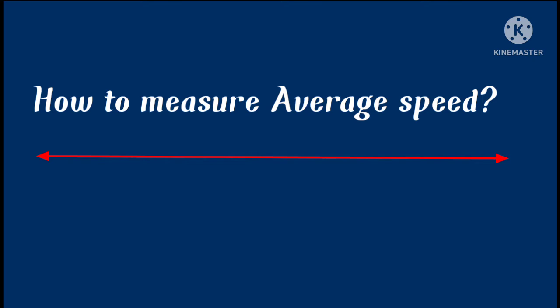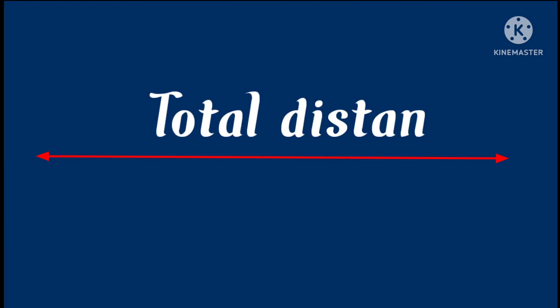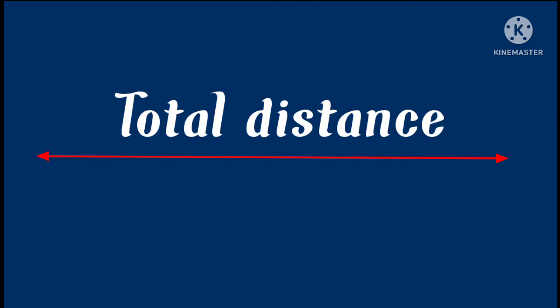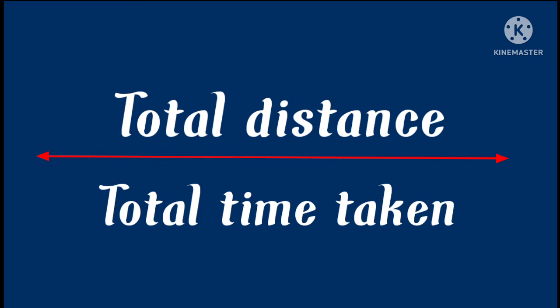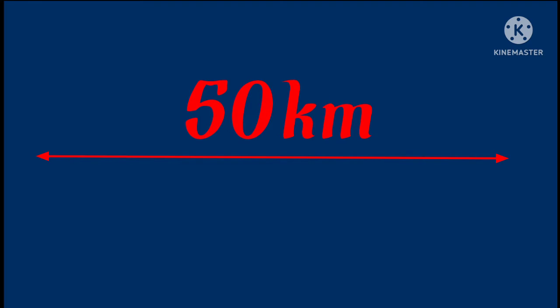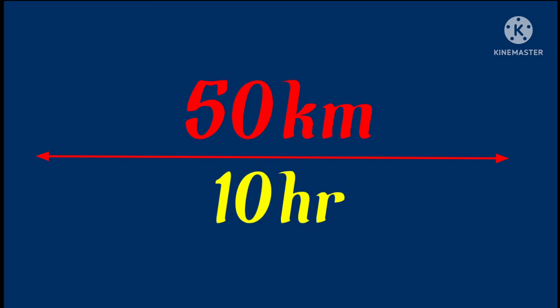The question is: how do we measure average speed of any object? To measure speed, it will be the total distance covered by that object divided by the total time taken to cover that distance. Say an object goes 50 kilometers and the time taken is 10 hours — to find average speed we do 50 divided by 10, as 50 is the distance and 10 is the time.